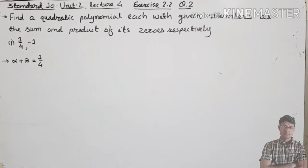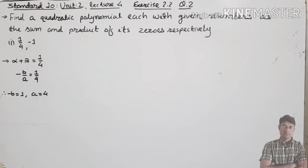For the book method: first, write alpha plus beta equals 1/4. The formula for alpha plus beta is minus b upon a, which equals 1/4. Comparing numerator and denominator on both sides: minus b equals 1 and a equals 4. Therefore b equals minus 1 and a equals 4.